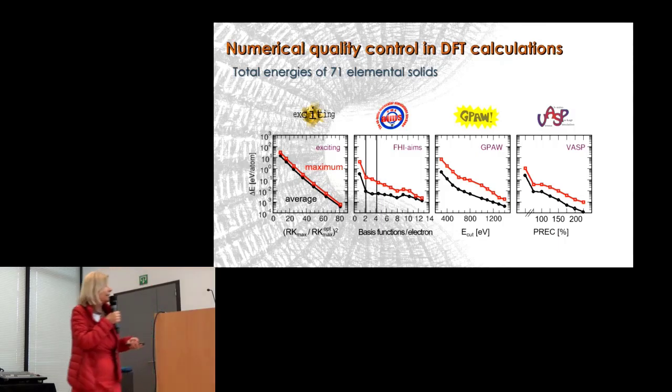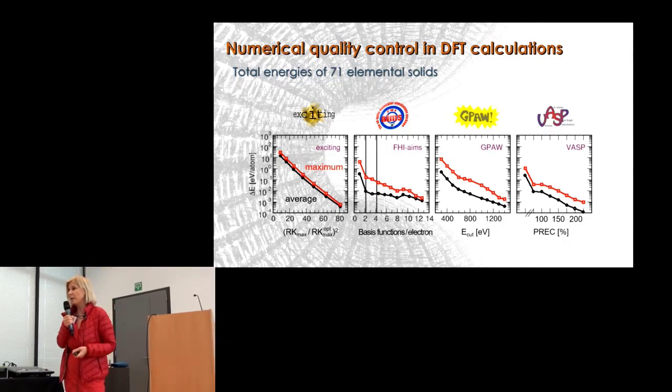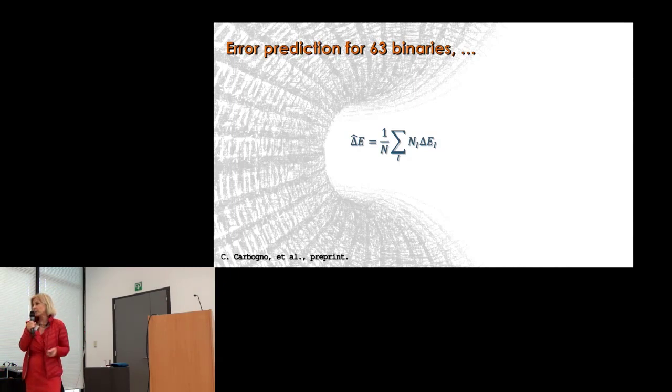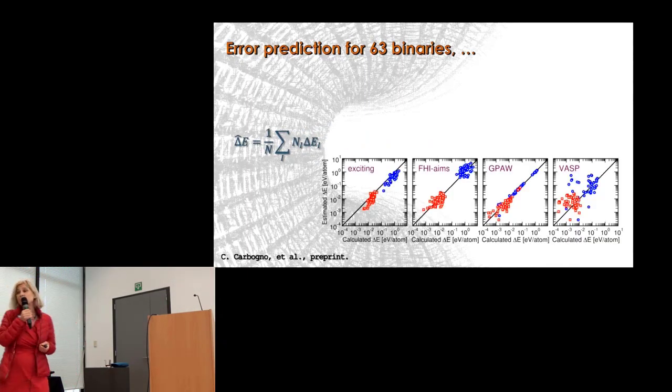We did this for the 71 elemental solids included in the delta test. The question was: can we learn from these errors how the errors behave in much more complex structures? We did something very simple: we know the errors from the elements from these 71 samples, but then we can predict the error of any complex alloy by just summing up the errors we have from the elements. This is the answer we got for binary materials, 63 binary materials, but we also have ternary materials and selected others.